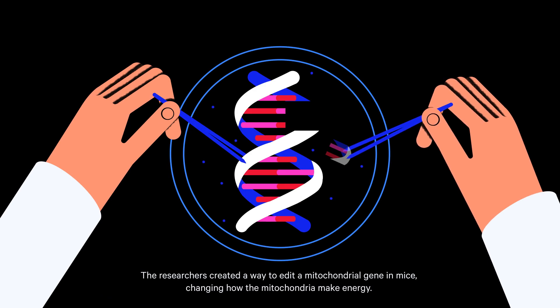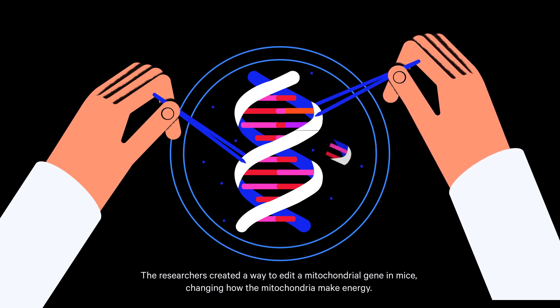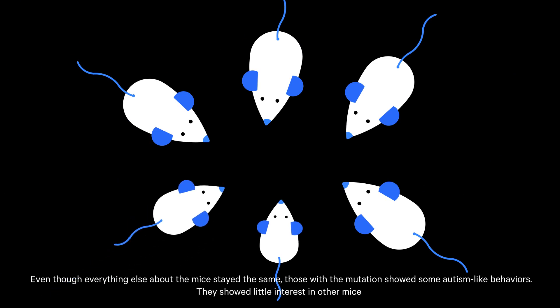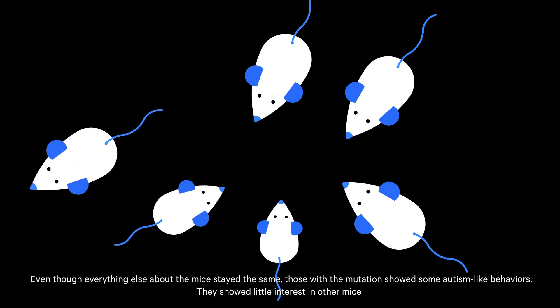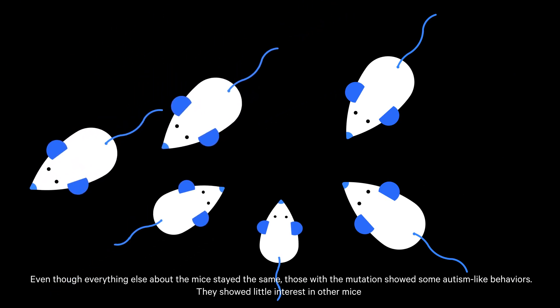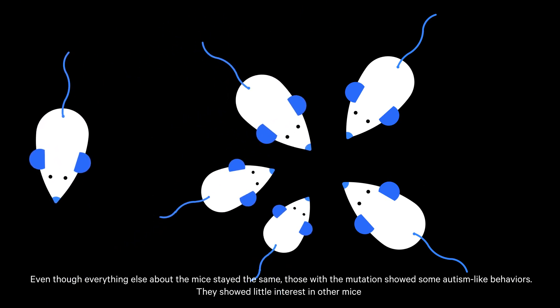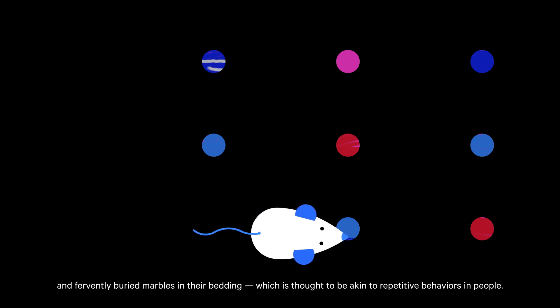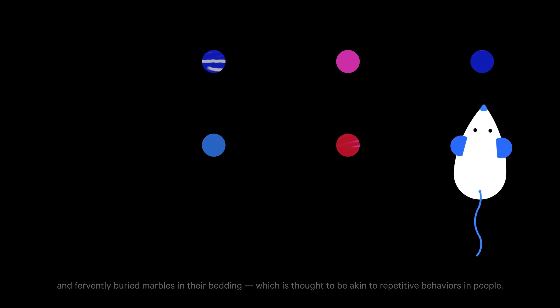The researchers created a way to edit a mitochondrial gene in mice, changing how the mitochondria make energy. Even though everything else about the mice stayed the same, those with the mutations showed some autism-like behaviors. They showed little interest in other mice and fervently buried marbles in their bedding, which is thought to be akin to repetitive behaviors in people.